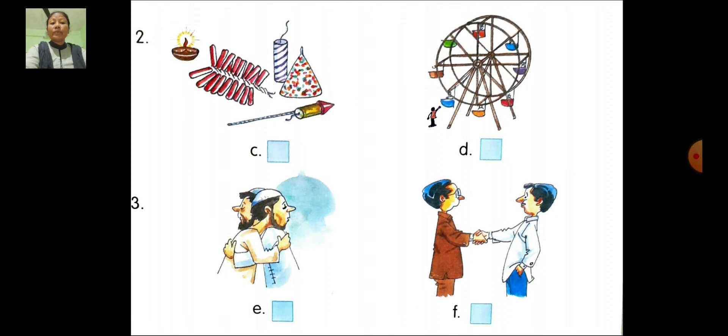Second number, look at the pictures. First picture, you can see crackers. Second picture, you can see a fair. Which picture indicates the festival of India? When do we burst crackers? We burst crackers on Diwali, so Diwali is the festival of India. Tick in the box and write the spelling: D-I-W-A-L-I, Diwali.